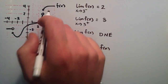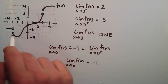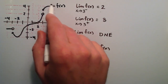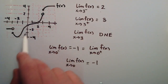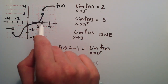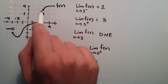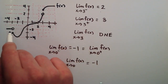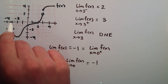Just looking at this function that I've sketched here, the limits are going to exist everywhere on this function except when x approaches 3, and they're not going to exist when x approaches negative 3.